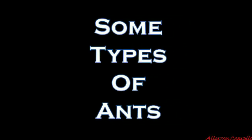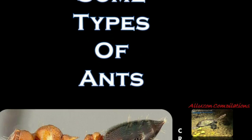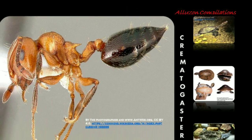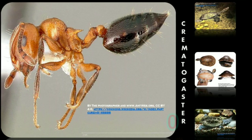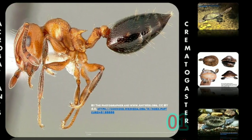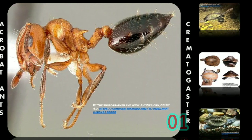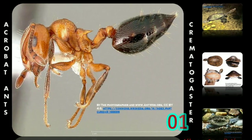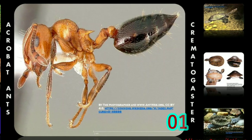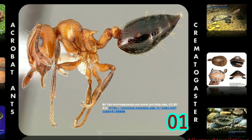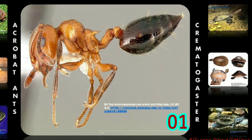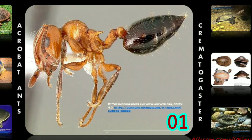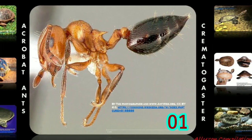Some common types of ants. Acrobat ants. Acrobat ants are usually arboreal, but they often live in many common areas in the wild. These areas are typically moist and are often dark. They can often be found in trees, collections of wood like firewood, and under rocks.